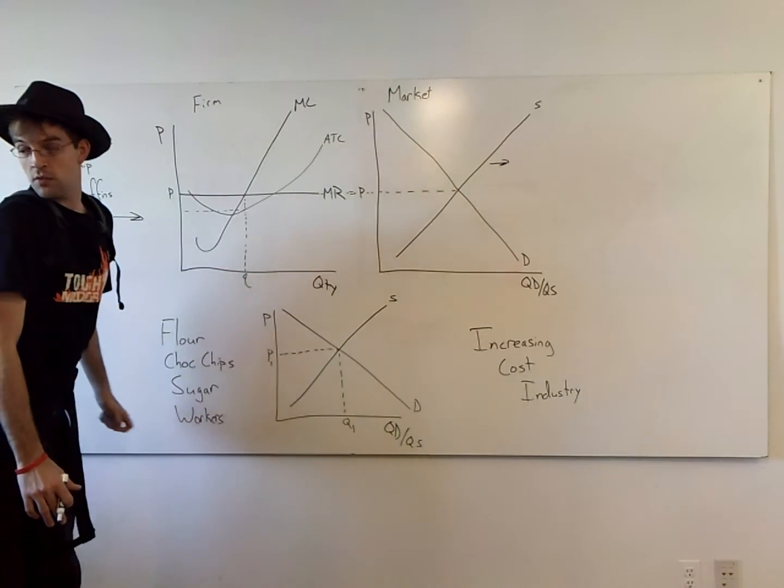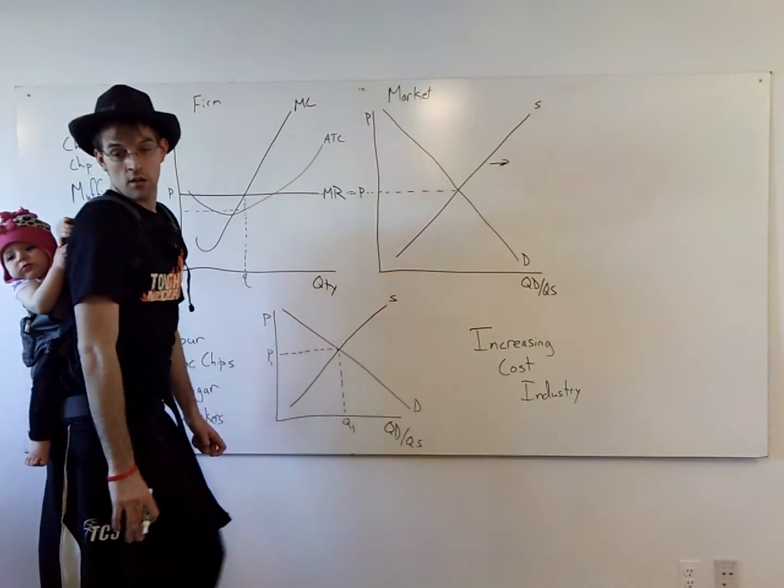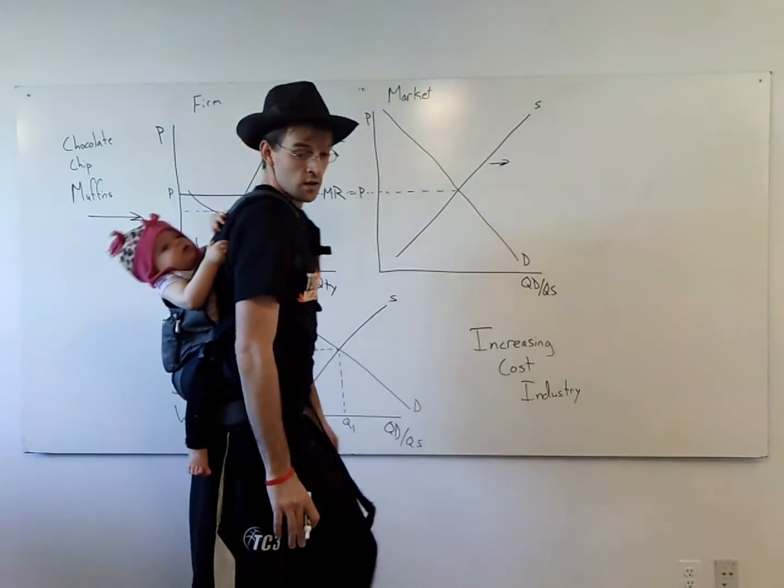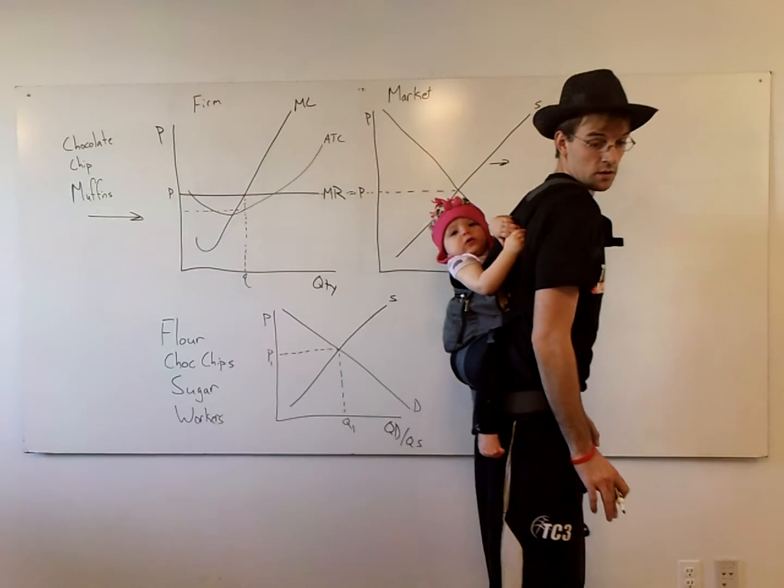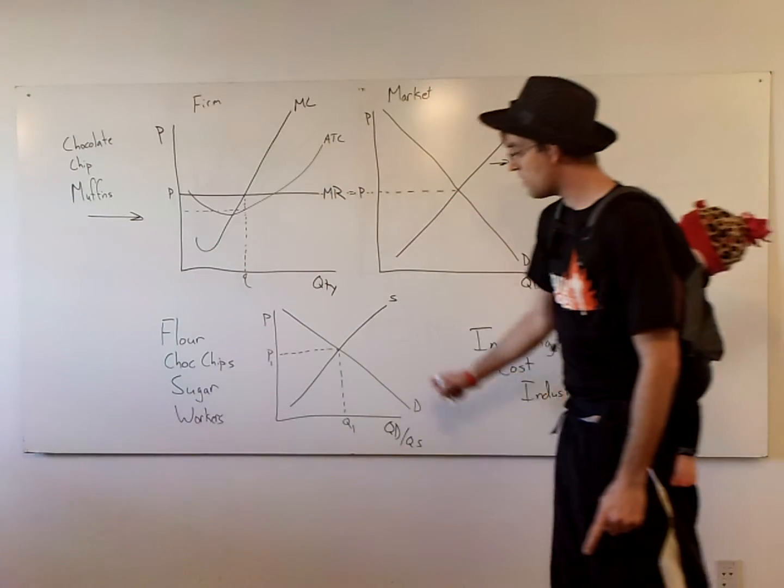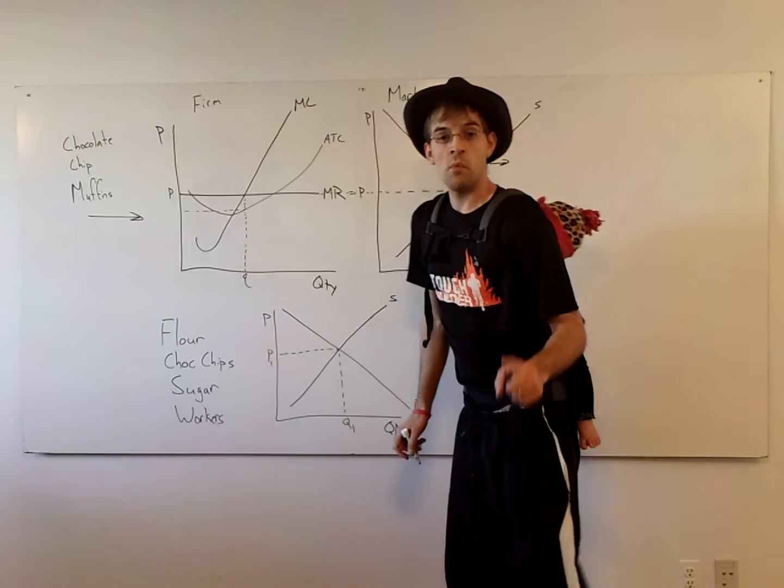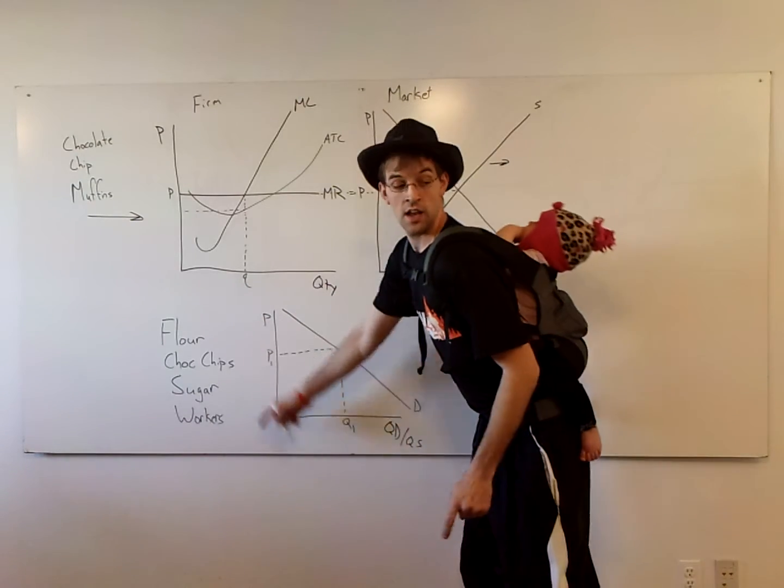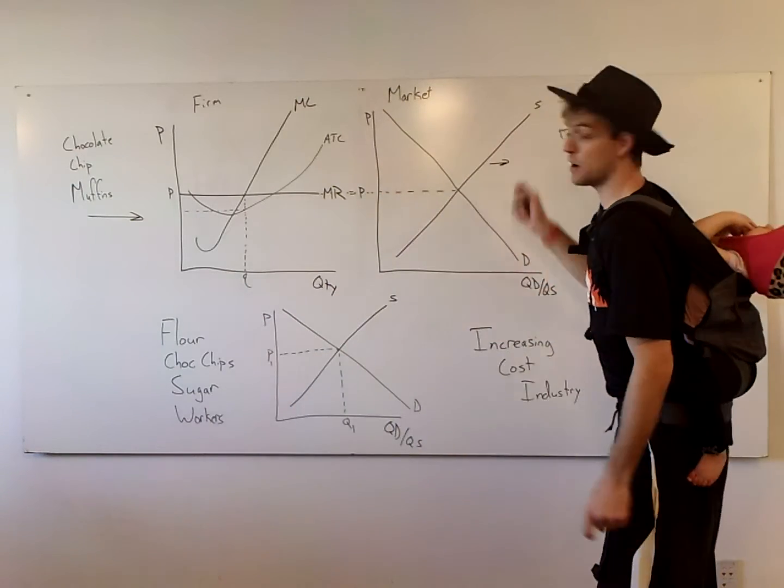However, Brooke Edson, what do you need to make a chocolate chip muffin? Flour, sugar, chocolate chips, maybe a cook, a worker of some kind. Very good. And you'll notice down here, I've drawn the market for those things.